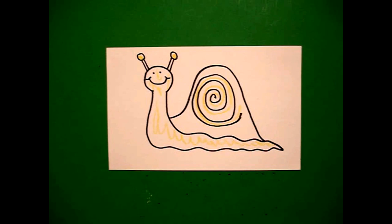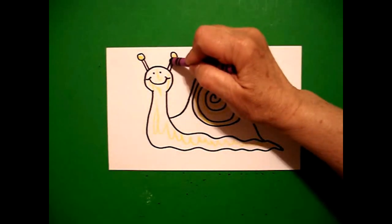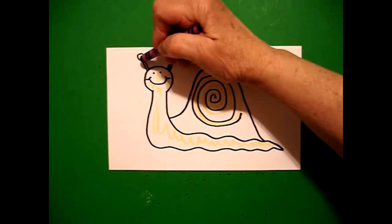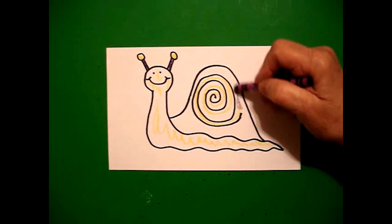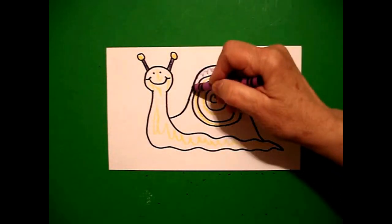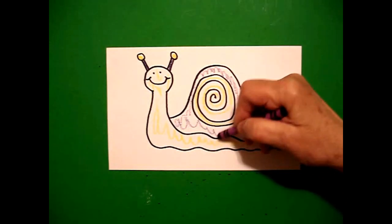Then I'm going to take purple and I'm going to color this section of my antennas purple. And then I'm going to very carefully color around this whole section of the shell.